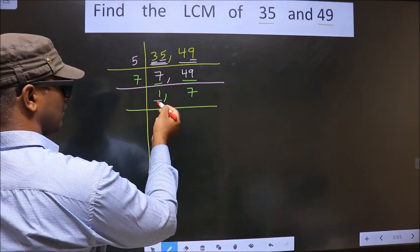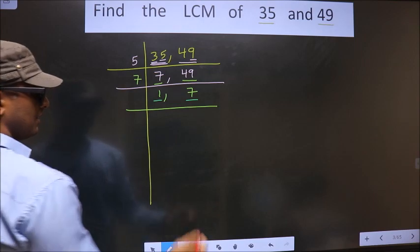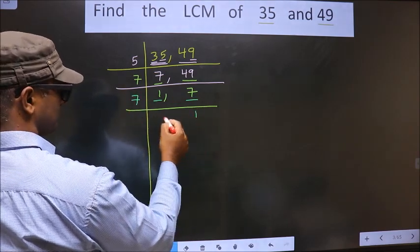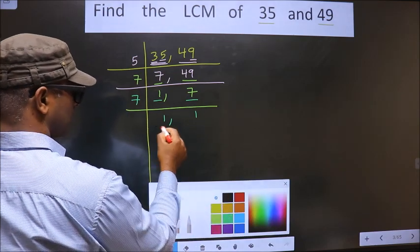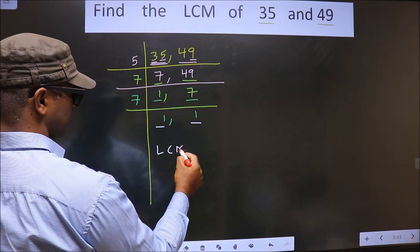Now, here we got 1, so we now focus on the next number, that is 7. 7 is a prime number, so we take 7 once. Now we got 1 in both places, so now our LCM is...